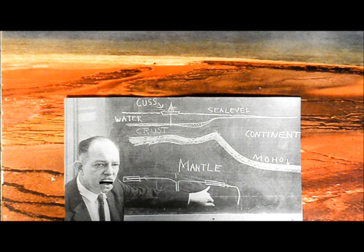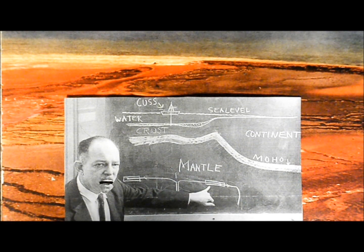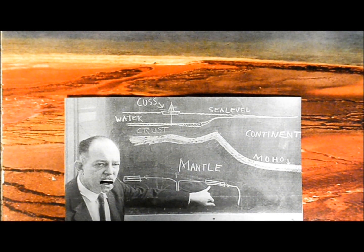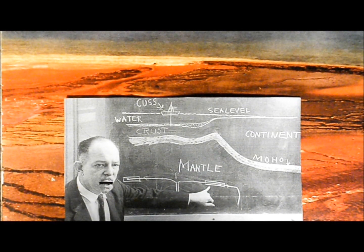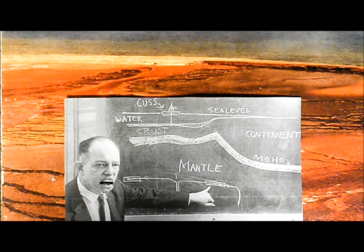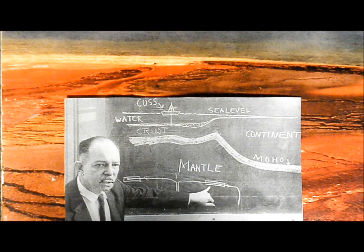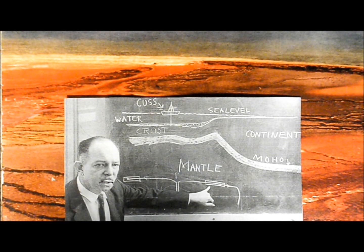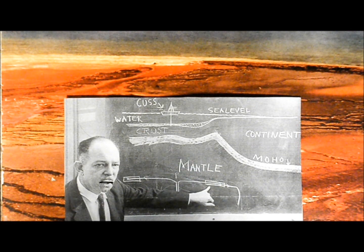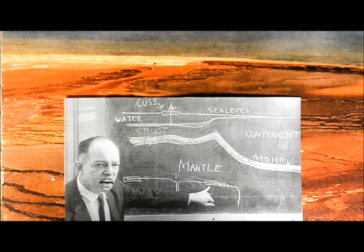However, there still wasn't much data supporting this theory. Harry Hess himself said in his paper The History of Ocean Basins: "The birth of the oceans is a matter of conjecture, the subsequent history is obscure, and the present structure is just beginning to be understood. I shall consider this an essay in Geopoetry."